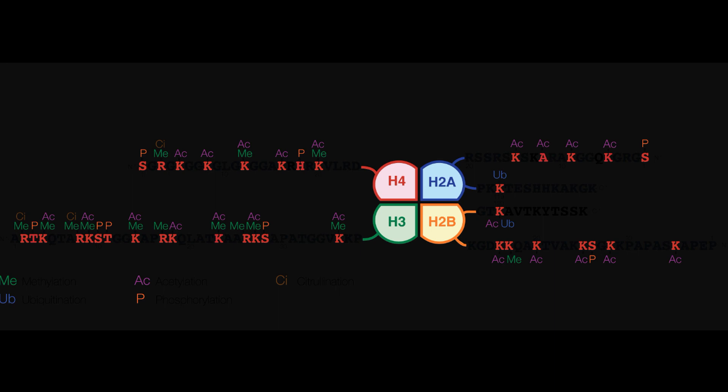There are many such chemical modifications of different amino acids on histone tails, and different combinations have different effects. It has been hypothesized that these constitute a histone code. As such, different DNA sequences in various stages of activation are characterized by different histone modification signatures. For example, active promoters are usually marked by the dual presence of acetylated histone 3 lysine 27 residues and tri-methylation of histone 3 lysine 4 residues, while active enhancers are marked by acetylated histone 3 lysine 27 residues and monomethylation of histone 3 lysine 4 residues.